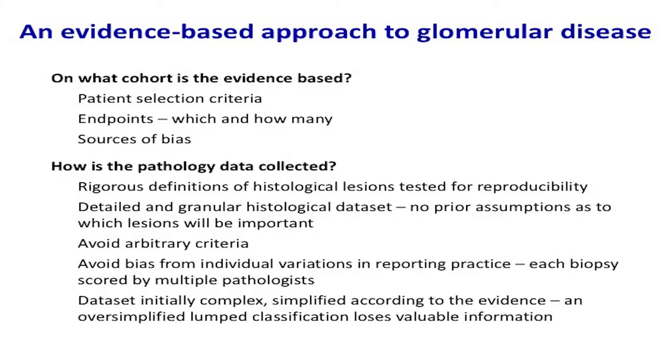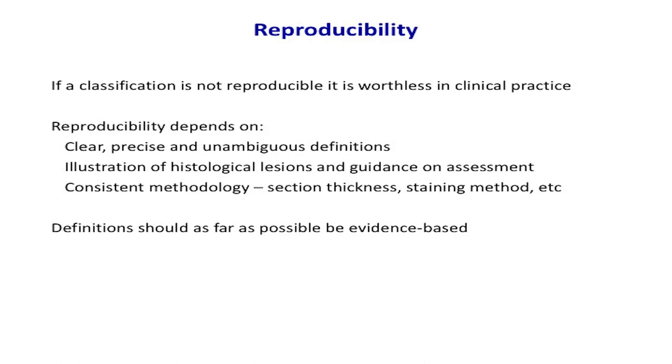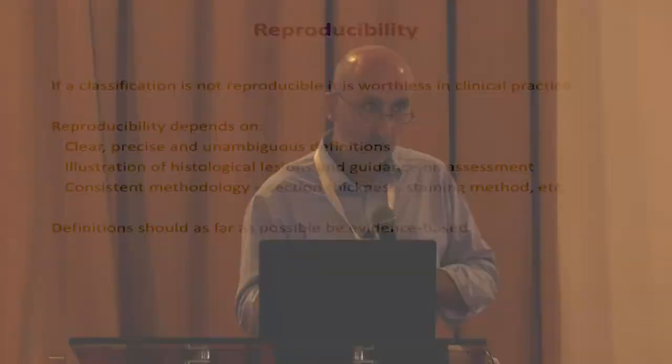Essential in a histological classification is how reproducible it is — does one pathologist use the classification in exactly the same way as another? If given the same biopsy, will they come up with the same conclusion? Reproducibility depends on very precise and unambiguous definitions, ideally illustrated, and consistent methodology. The real difficulty for pathologists is when lesions incorporated in a classification are identified in different stained sections. How do you incorporate information from an H&E, a PAS, and a silver stain, all in one reproducible classification? That is a challenge pathologists are still grappling with.